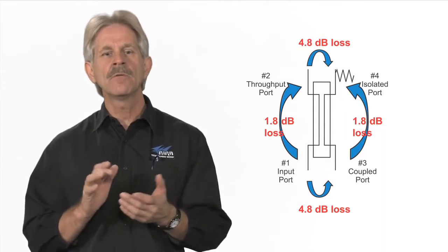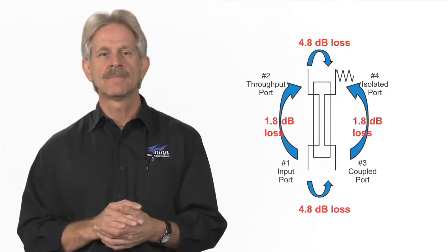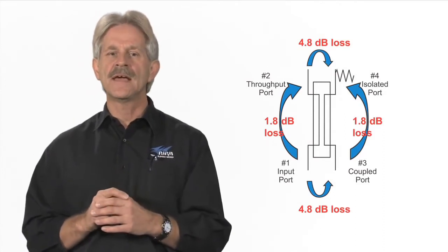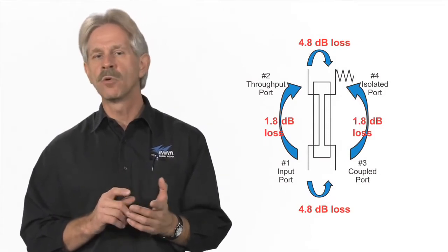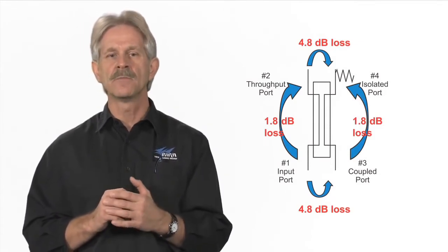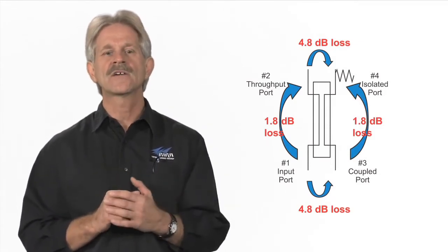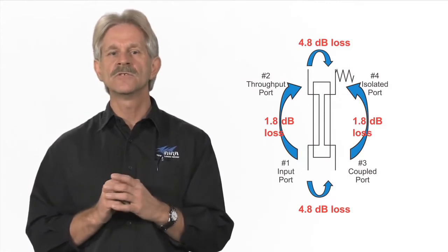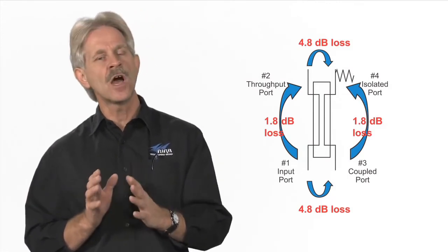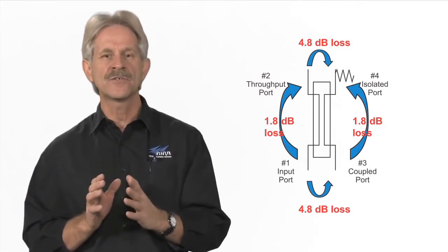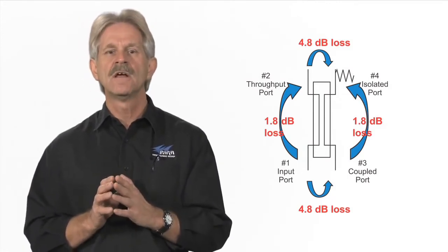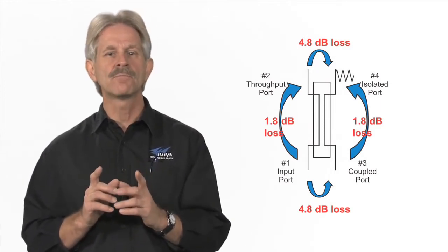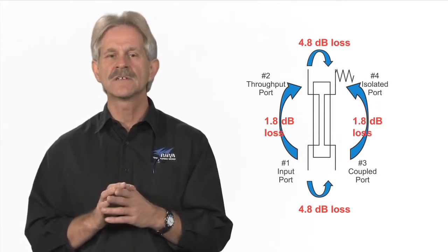An example of one is shown in this image. Using couplers allows a DAS designer to supply a smaller portion of the available signal to a shorter coax branch, but preserve the majority of the RF energy for the longer, higher loss branch. This avoids the need for inline boosters in branches with excessive loss.